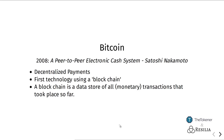A blockchain can be understood as a data store stored in many different locations, containing all transactions that have taken place so far in the system. For Bitcoin, these transactions were only monetary transactions — how much money one person paid another person. But it didn't take very long before people realized that you could also store other types of information in there.